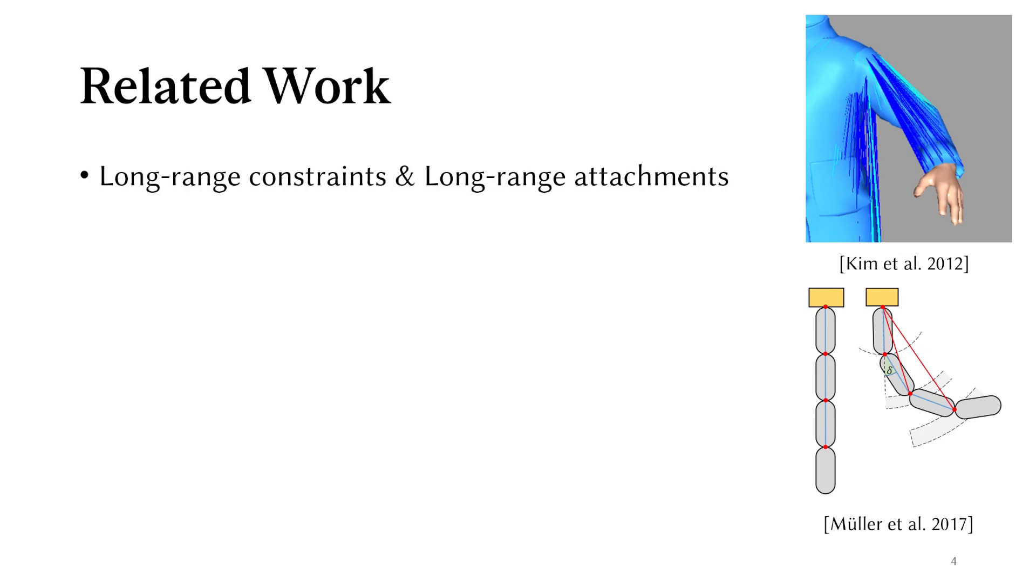And that is what long-range constraints and long-range attachments do. There are constraints that attach springs to distant elements to help the propagation of information. Such constraints change the formulation of the problem, needing to eventually be dropped for ground-truth simulations. Our solver will be greatly inspired by these concepts.